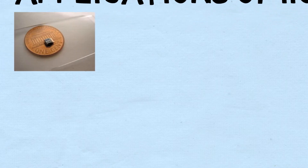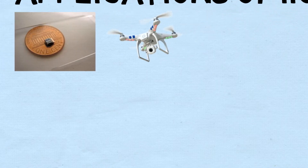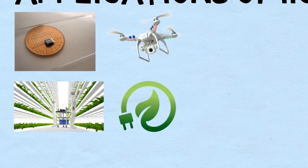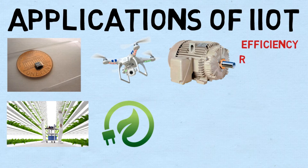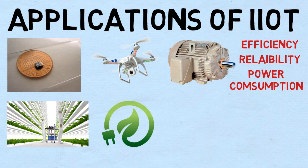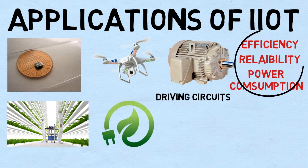Smart applications of IoT — from smart dust drones and futuristic farming to energy networks — are creating a wave across the globe. Motors are a generic element for industry, and their efficiency, reliability, and power consumption need to be taken care of. Using IoT driving circuits, long-term reliability of motors can be achieved.